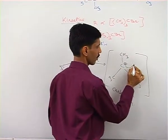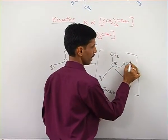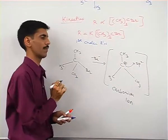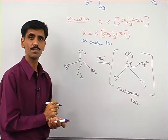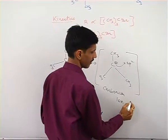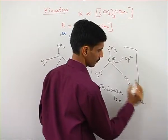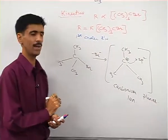Next important information is, this carbocation, its hybridization is sp2 hybridization. Its hybridization is sp2. And the geometry is planar geometry. Geometry is planar.